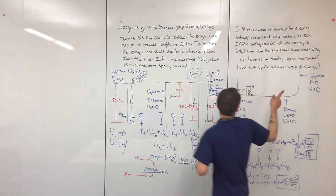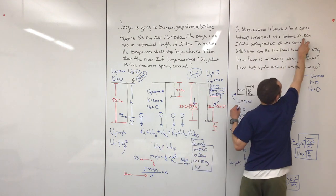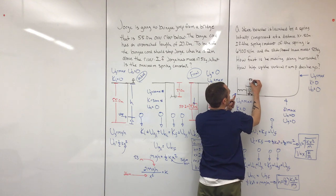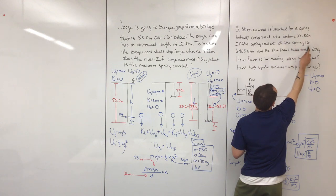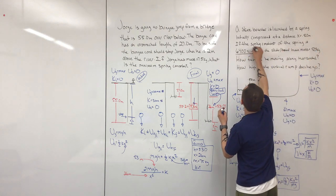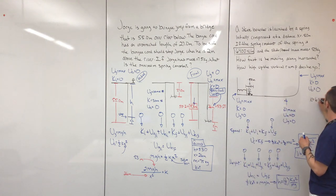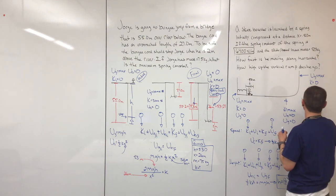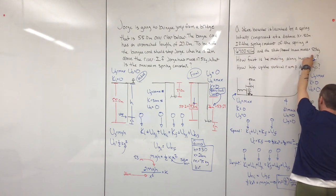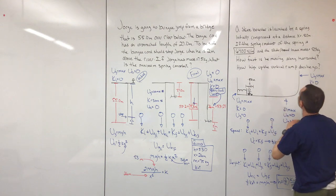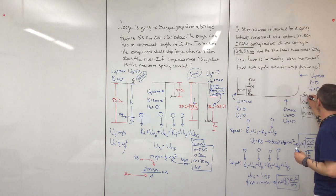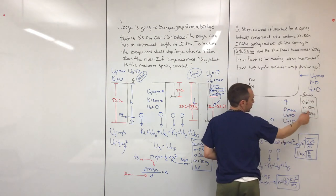Now the second question: a skateboarder is launched by a spring initially compressed a distance of X equals 0.50 meters — the spring has been compressed by that amount. The spring constant is 64 newton-meters. The mass of the skater and board together is 50 kilograms. We have two questions: how fast is he moving along the horizontal, and how high up the vertical does he go? Those are our givens: spring constant, compression, and mass.